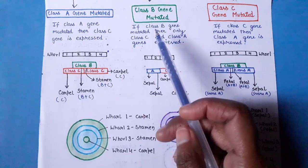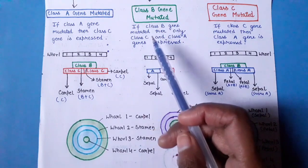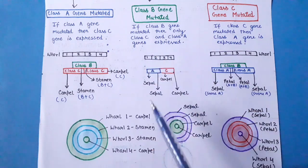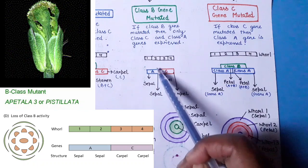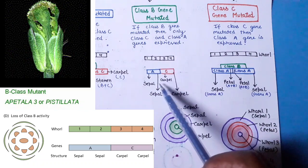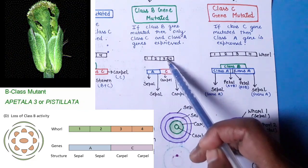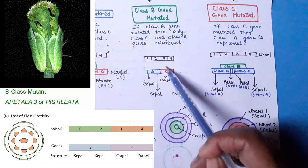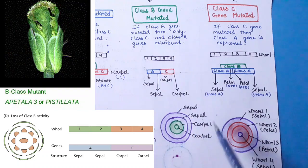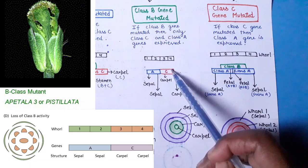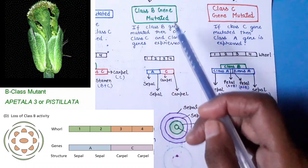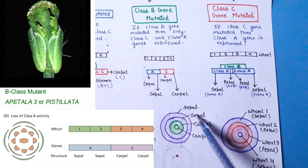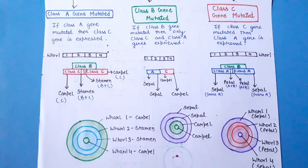For Class B gene mutation, only Class A and Class C genes are expressed. Whorl 1: Class A only → sepal; whorl 2: Class A only (no Class B) → sepal; whorl 3: Class C only (no Class B) → carpel; whorl 4: Class C only → carpel. The Class B mutant flower therefore has sepals in whorls 1 and 2, and carpels in whorls 3 and 4 — no petals or stamens.